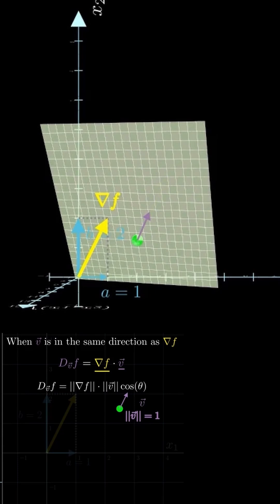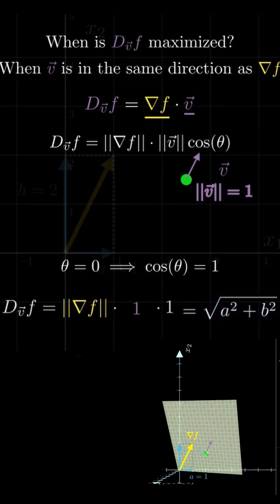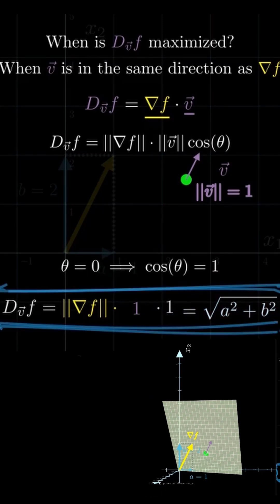And when the two vectors point in the same direction, the angle between them is 0, so cos theta equals 1. Plugging this into the dot product formula gives us the product of their magnitudes. But since v is a unit vector, its magnitude is 1. So, in this special case, the directional derivative just equals the magnitude of the gradient itself.